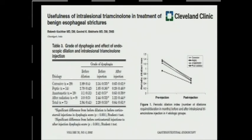Regarding adjunct steroid therapy for benign esophageal strictures — there is good literature showing that adding steroid injection at the site of the stricture circumferentially will help decrease the overall need for additional dilations. One study looked at the grade of dysphagia using the Atkinson grading scale before and after steroid injection, and found a reduced number of subsequent dilation episodes. This has also been demonstrated in other subsequent studies.